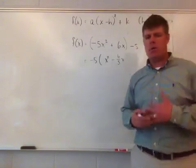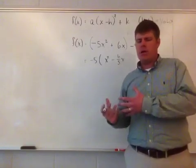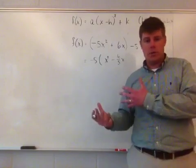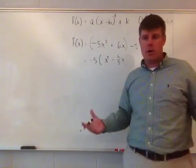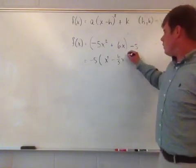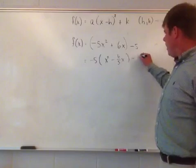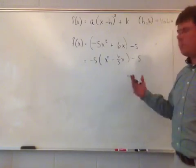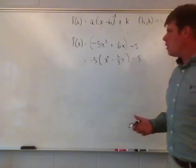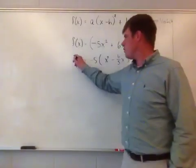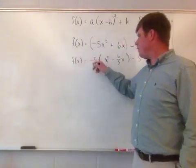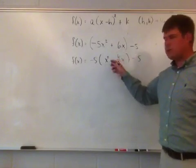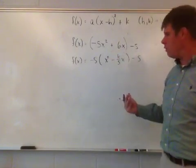When figuring out what number to put in, just write the result of the division in simplest form. Then the constant term, minus 5, just comes along for the ride and will be handled later. So now I have negative 5 times this expression inside, and this is the function I'm going to use completing the square on.